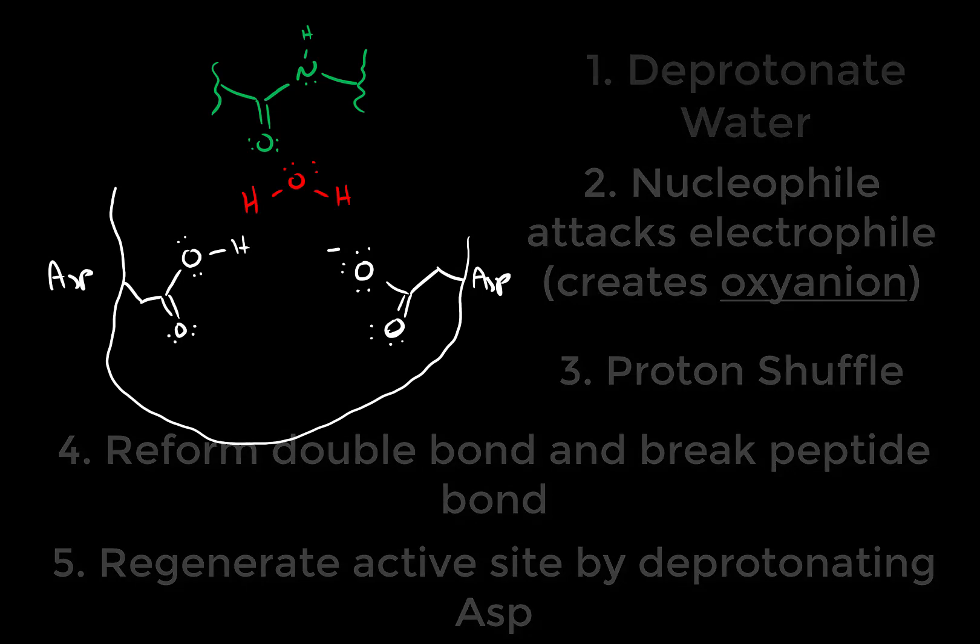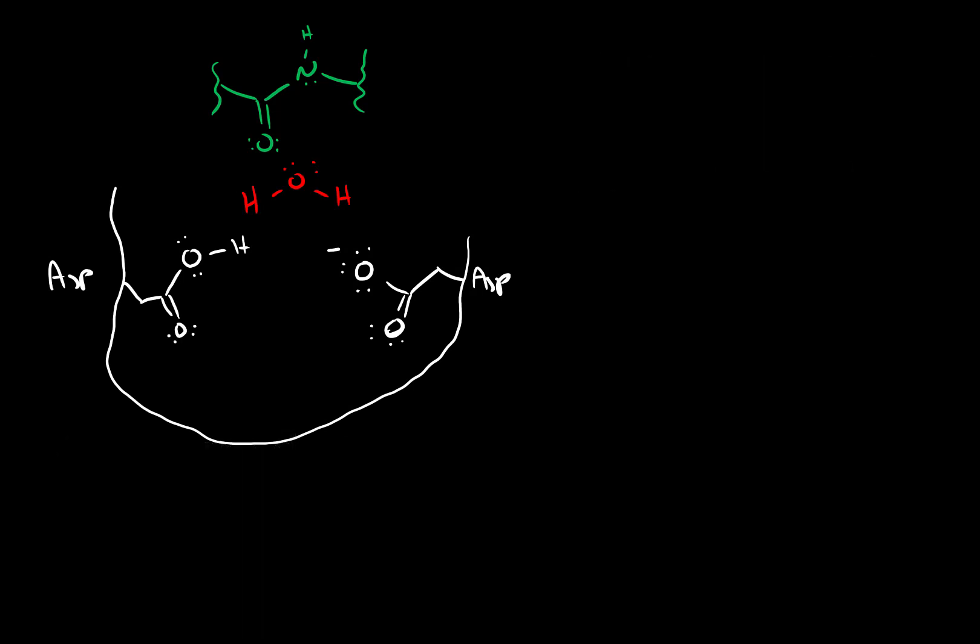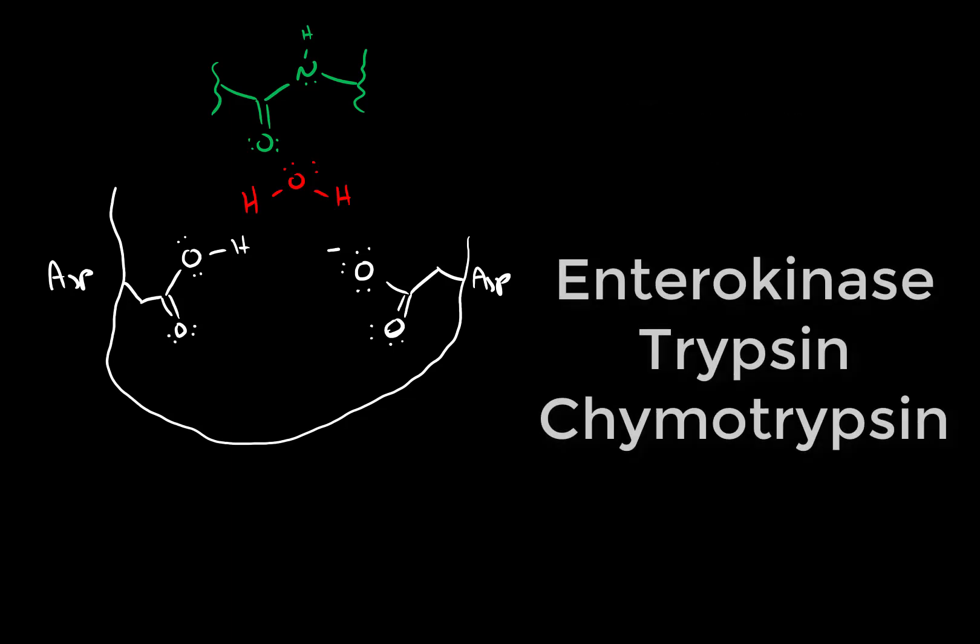This is the mechanism by which pepsin works. It's a hydrolase that relies on these two aspartic acids in the active site of the enzyme to catalyze the hydrolysis reaction. The other enzymes we've talked about—enterokinase, trypsin, and chymotrypsin—all rely on a mechanism catalyzed by a catalytic triad. These all fall into the category of what are known as serine proteases. In the next video, we'll explore how serine proteases work.